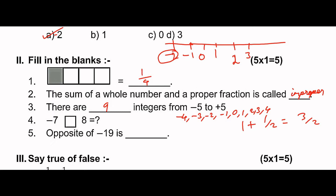Next: opposite of minus 19 is dash. The opposite of minus 19 is plus 19.